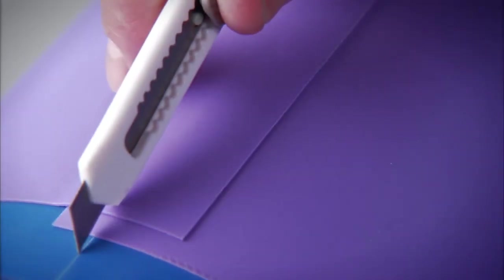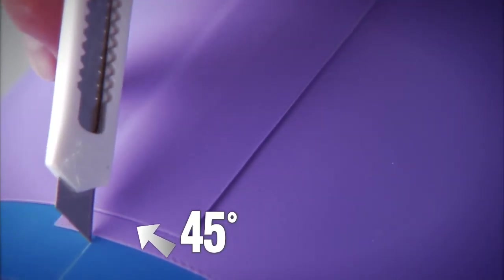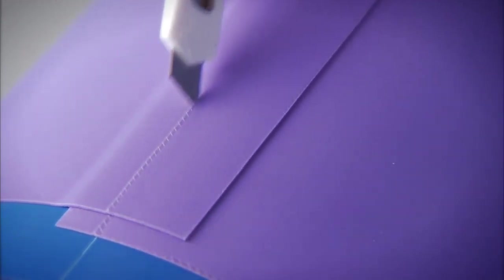To create a precise butt splice, hold a blade at a 45 degree angle and cut through both layers of tape.